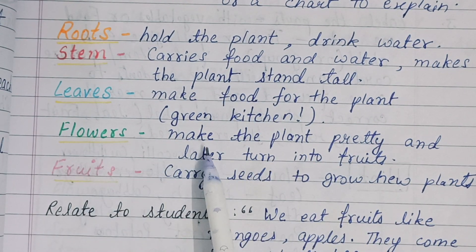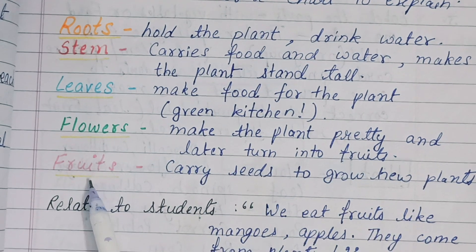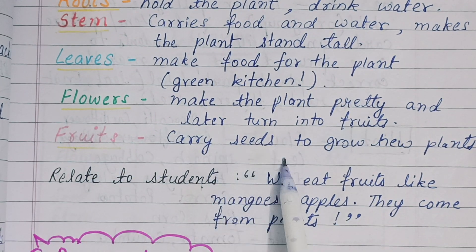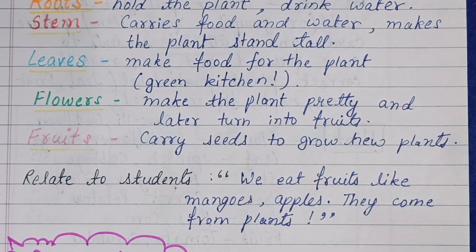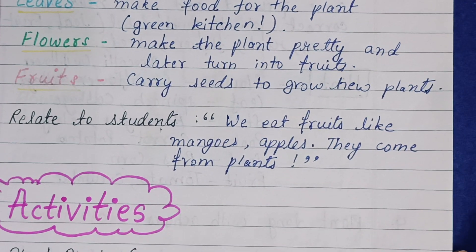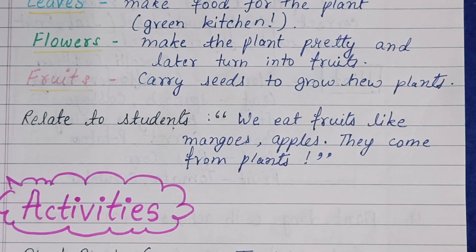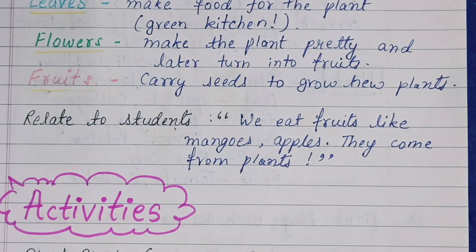Flowers make the plant pretty and later turn into fruits. Fruits carry seeds to grow new plants. Explain one by one by showing the plant or chart. Also relate to students that we eat fruits like mangoes and apples — they come from plants.